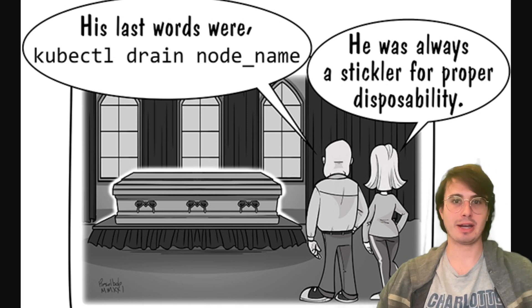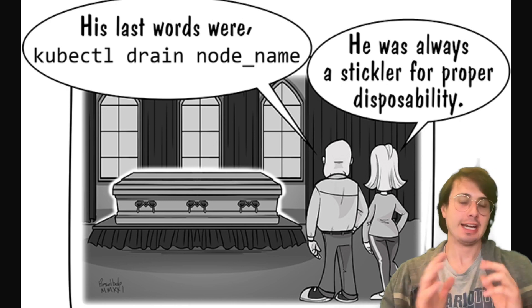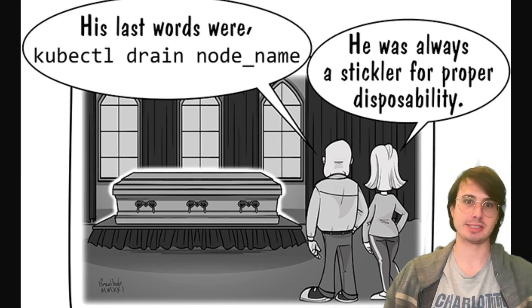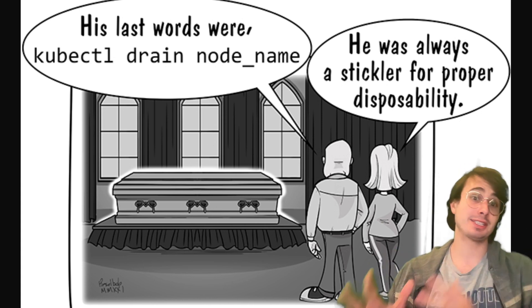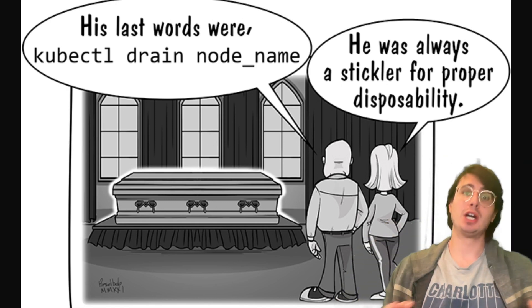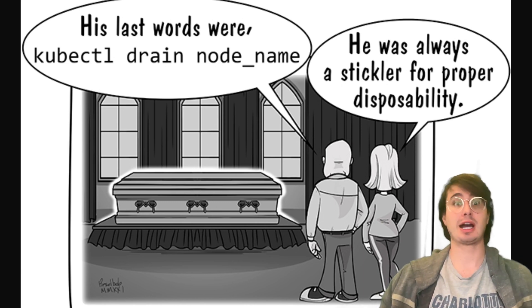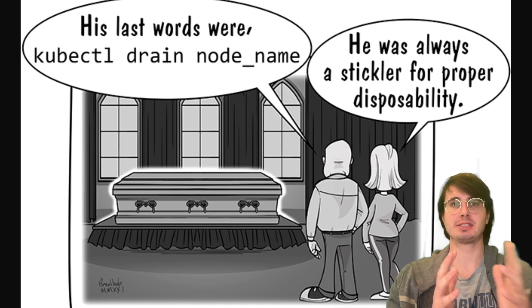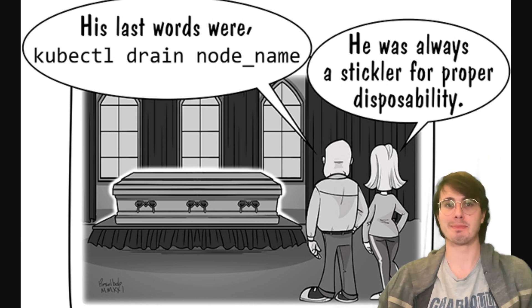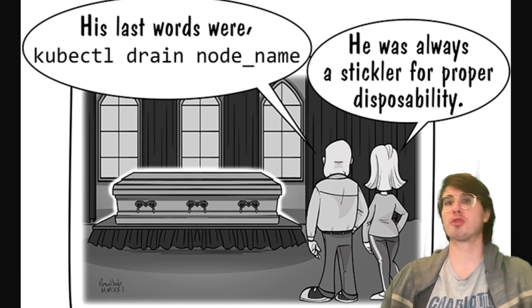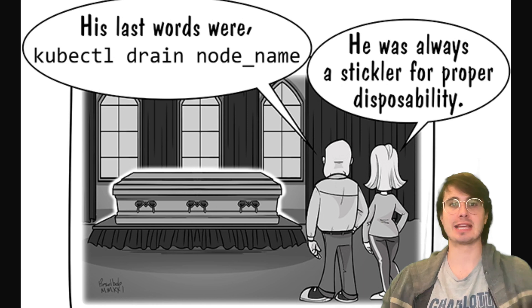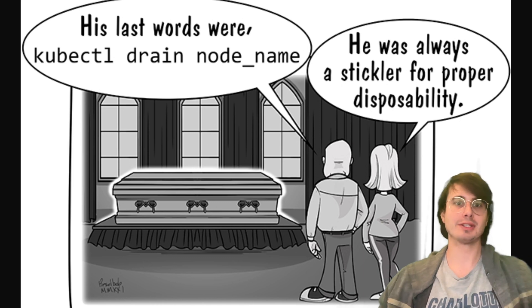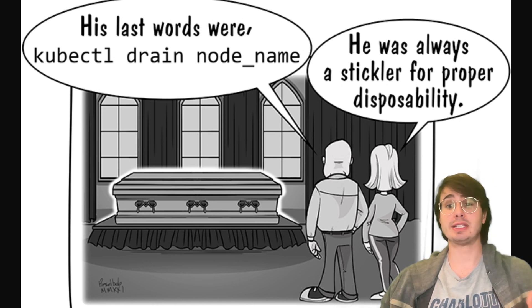The next concept is disposability. Disposability in 12-factor apps means that processes must start quickly and shut down gracefully. Fast startup times enable rapid scaling and deployment, while graceful shutdown ensures that concurrent operations complete fully before processes are terminated — so you don't have operations getting killed halfway through. You want them to complete properly before the underlying processes are actually killed. This is really critical to being able to scale up and scale down quickly to meet the needs of your environment.